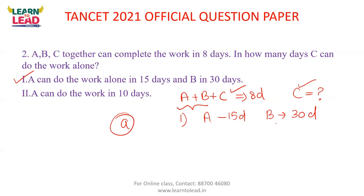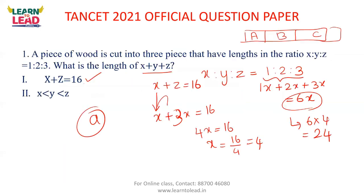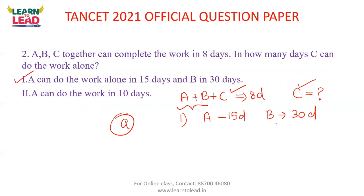For Statement 2, you can check but it alone cannot give the answer. You cannot answer with Statement 1 alone or Statement 2 alone separately without checking. Remove Statement 2 and check. Statement 2 alone is not sufficient. So you check both options — Option A is the first option.